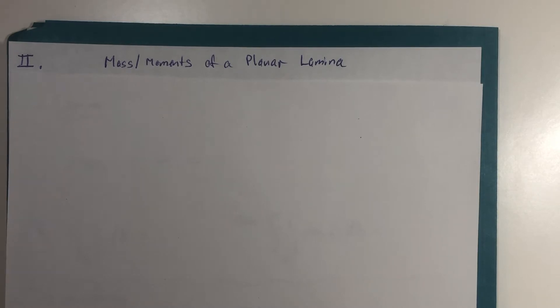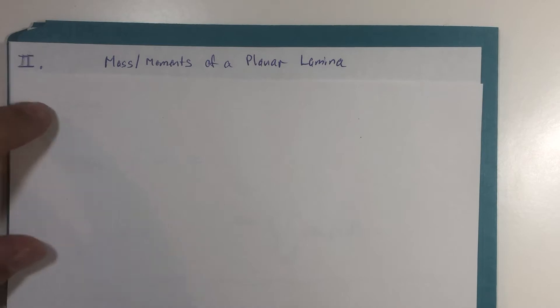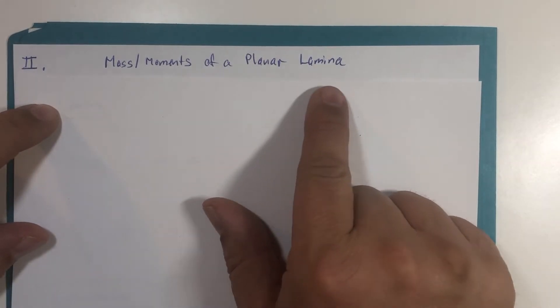So here we go. I'm just going to lay out for you the formulas that involve the moments and the mass of a two-dimensional region. The text calls it a planar lamina. Lamina, that's fun to say. Think of a planar lamina as a very, very thin region.